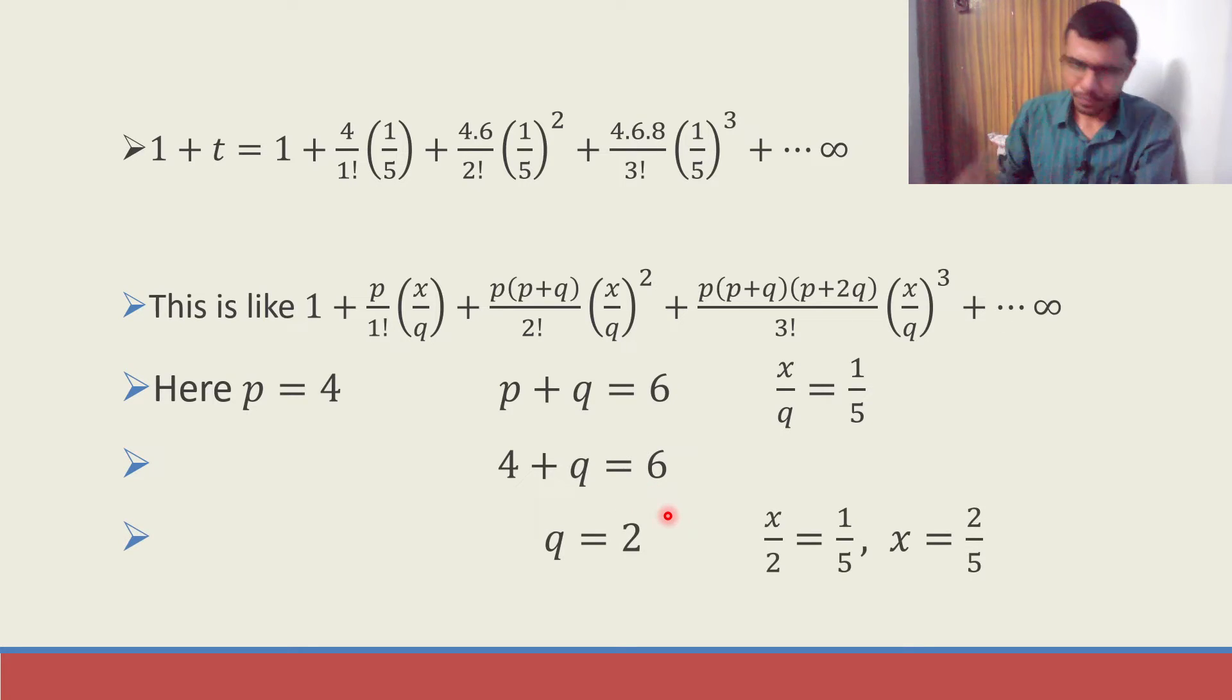Likewise here I have x/q = 1/5. So q I got it as 2, x/2 = 1/5. So x will be equal to 2/5. So I got my p, q and x.